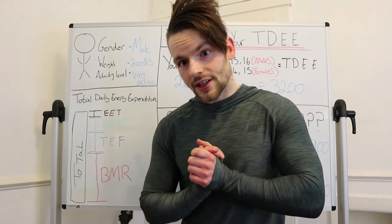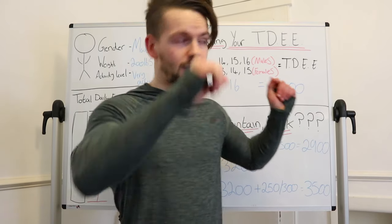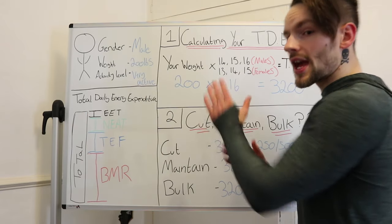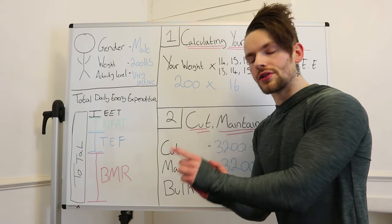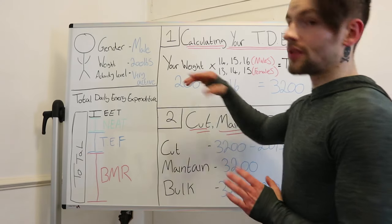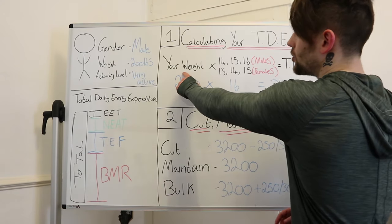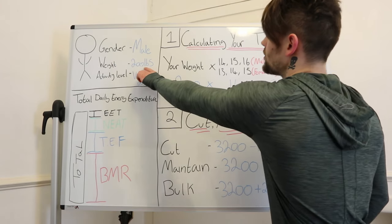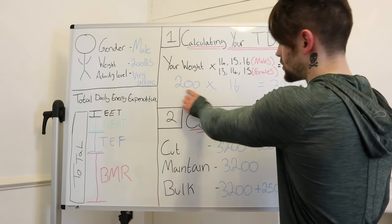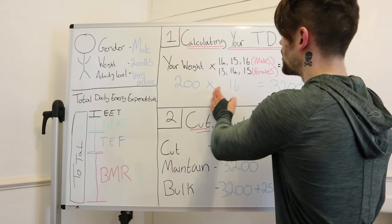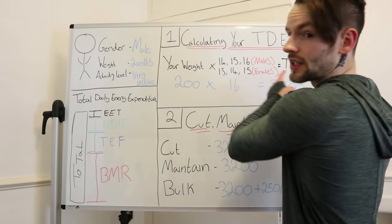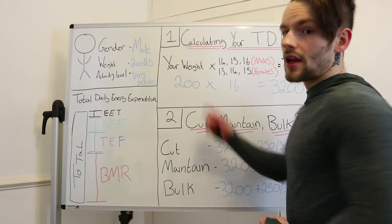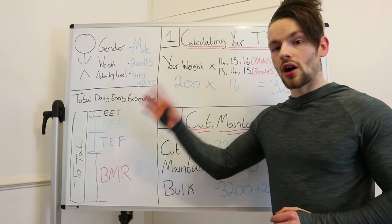So let's get into working out our calories. The first step to work out an estimation of your TDEE is to take your weight in pounds — in our example, 200 pounds — and multiply it by either 14, 15, or 16 for males, or 13, 14, or 15 for females. This is where your activity level comes into play.